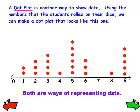A dot plot is another way to show data. Using the numbers that the students rolled on their dice, we can make a dot plot that looks like this one. Again, we can see that the number 5 was rolled by 1, 2, 3, 4, 5, 6 students. The number 3 was rolled by 4 students. Both of these are ways of representing the data.